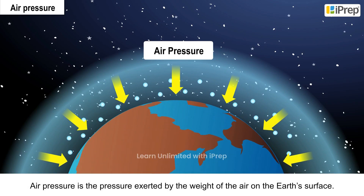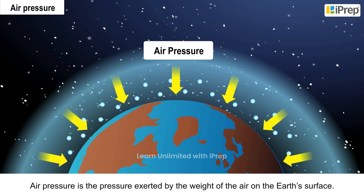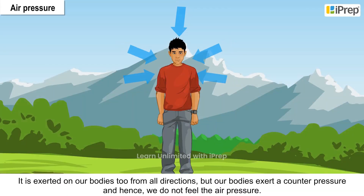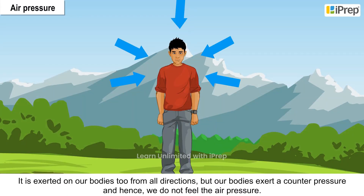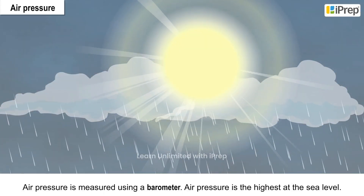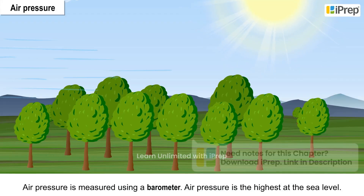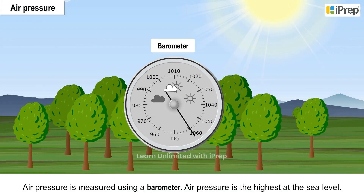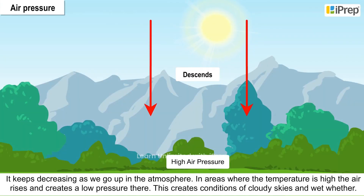Air pressure is the pressure exerted by the weight of the air on the earth's surface. It is exerted on our bodies too from all directions, but our bodies exert a counter pressure, so we do not feel it. Air pressure is measured using a barometer. It is highest at sea level and keeps decreasing as we go up in the atmosphere.